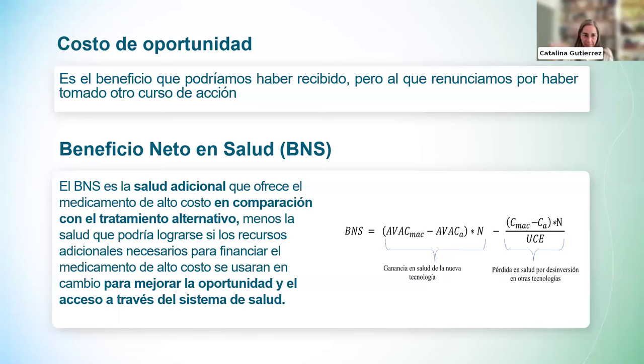Úrsula pide a Catalina que explique brevemente qué es el costo de oportunidad. Catalina propone proyectar unas diapositivas y explica: elegir financiar algunos servicios de salud significa necesariamente no financiar otros. Estas decisiones tienen consecuencias en términos de la salud poblacional; siempre hay alguien que paga el plato roto por los servicios que se dejaron de cubrir. El costo de oportunidad es el beneficio al que renunciamos por haber tomado otro curso de acción. Para medirlo, se usan dos conceptos en economía de la salud: el beneficio neto en salud y el umbral de costo-efectividad.